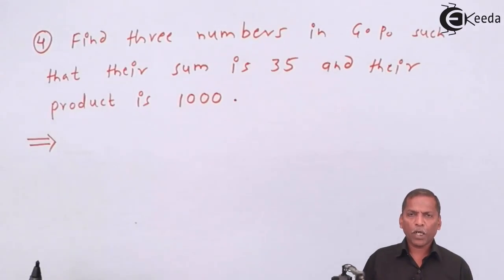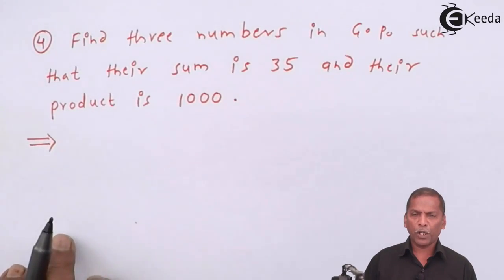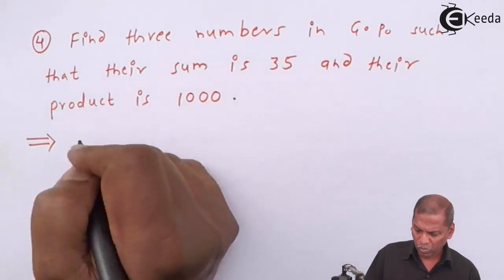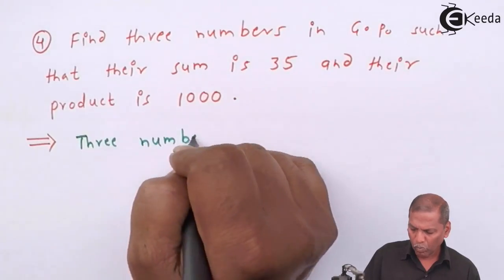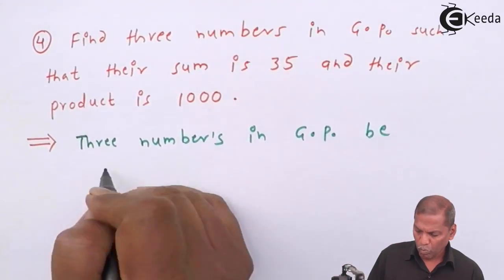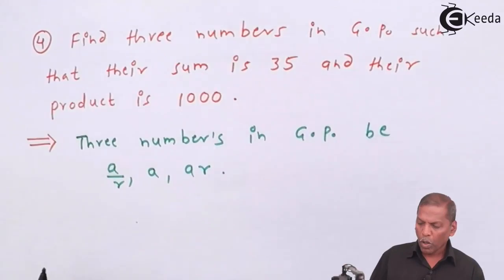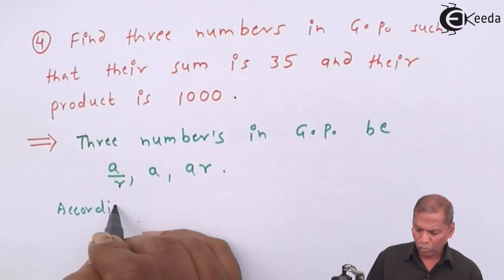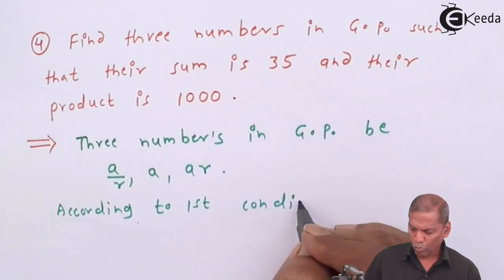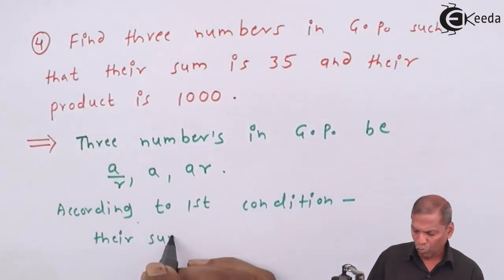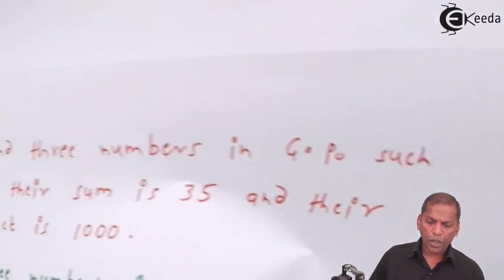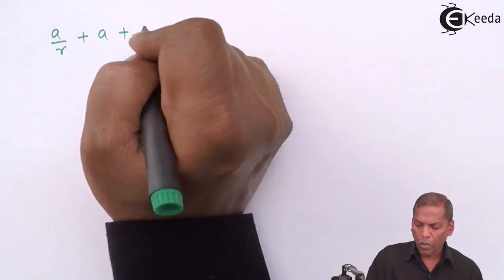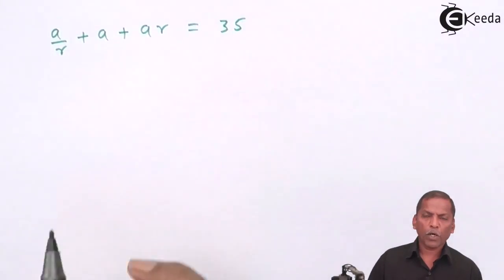The solution is quite simple. First of all, we consider 3 numbers in GP as A/R, A, and AR. Now according to the first condition, their sum is 35. It means A/R + A + AR is equal to 35.